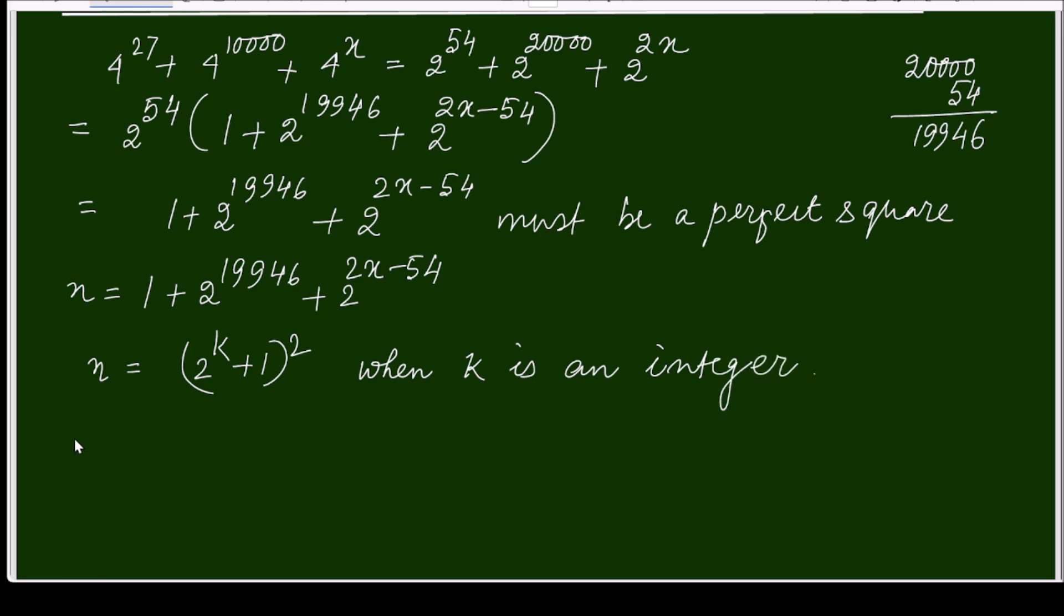Now expanding this square, (2^k + 1)^2 equals 2^(2k+1) + 2·2^k, which can be written as 2^(2k+1) + 2^(k+1).